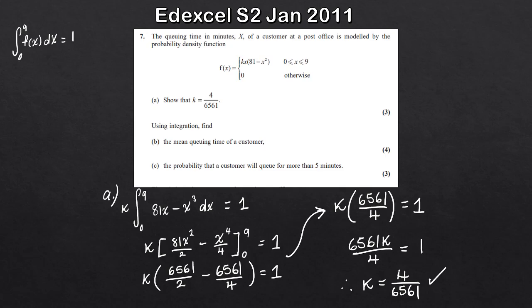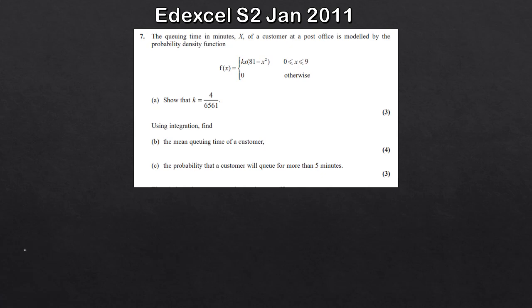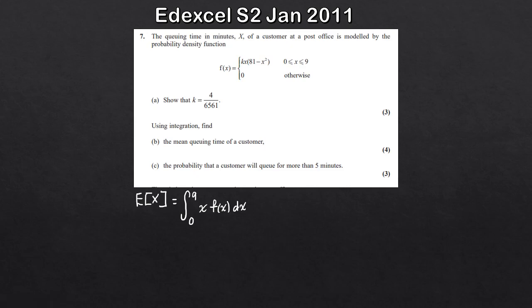For part b, we use integration to find the mean queuing time. The formula for the expectation of x is given in the formula book: E[X] equals the integral over the domain, 0 to 9, of x·f(x) with respect to x. We take f(x), multiply it by x, integrate between 0 and 9, and that gives our mean queuing time. We'll use linearity with k again.